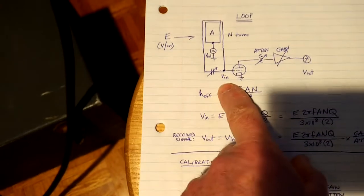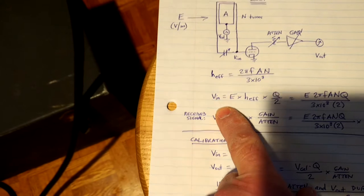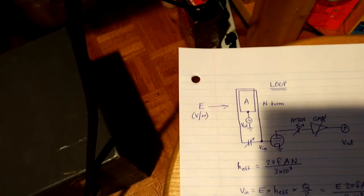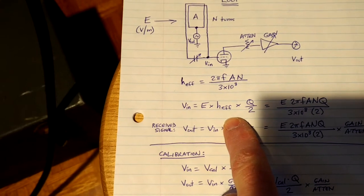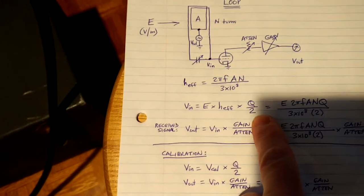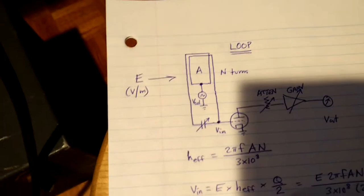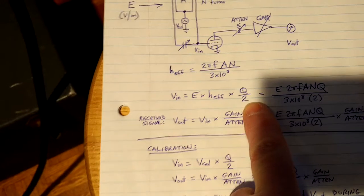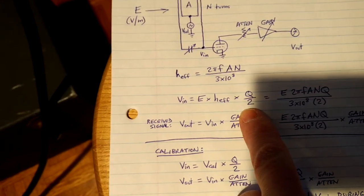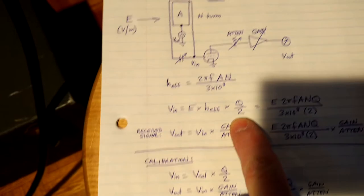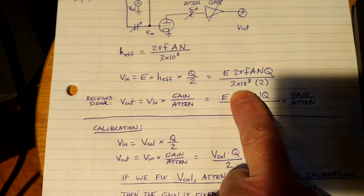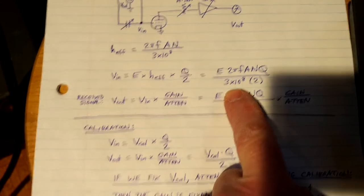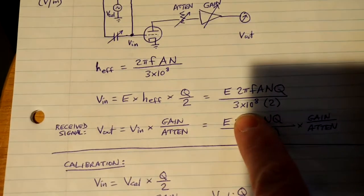So the input voltage from this loop in this electric field E will be E times the effective height times Q, because of the resonant circuit, the voltage is amplified by the Q factor, and divided by 2 because the antenna's balanced. We're only using one half of it. So that is the formula combined, E 2πF, A and Q, over 3 times 10 to the 8th, times 2.